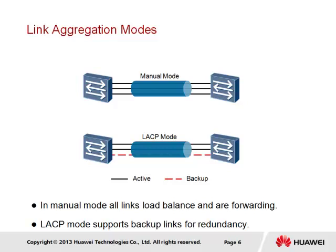The alternative is the use of a Link Aggregation Control Protocol, or LACP. The LACP mode enables links to operate with active links and backup links in the event that the active link fails. This helps to ensure that consistent bandwidth is maintained over the Ethernet trunk even in the event of link failure. In this section, however, we focus primarily on the layer 2 manual link aggregation mode.